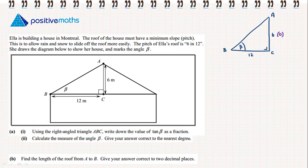So 6 is the side opposite to the angle. 12 is the side adjacent to the angle. And AB is the hypotenuse. We want to recall that the tan of an angle is opposite over adjacent. So the tan of β is going to be 6 over 12, which will simplify to be 1 over 2.